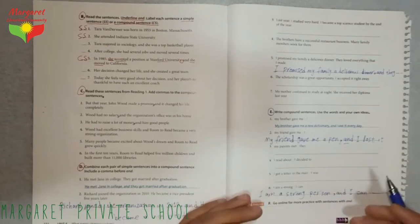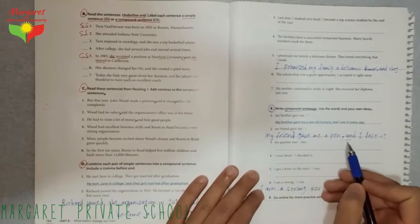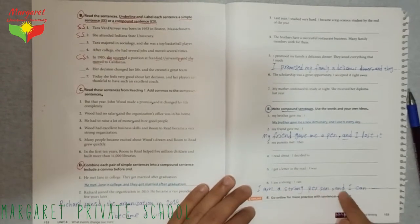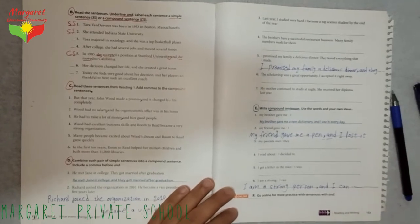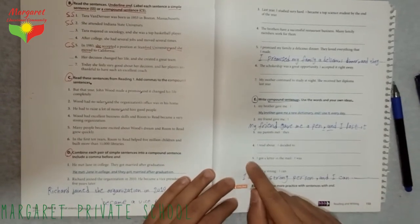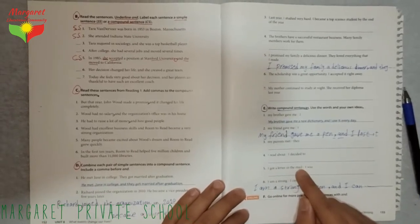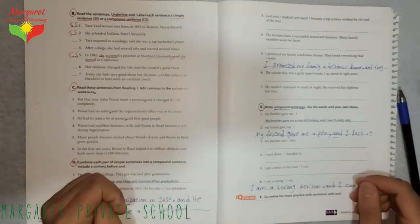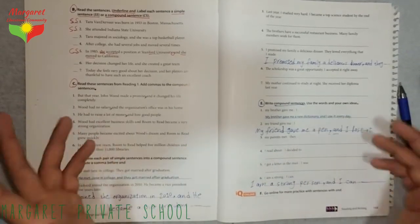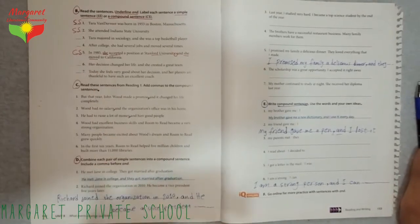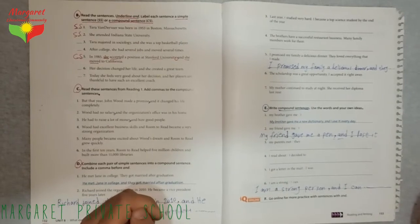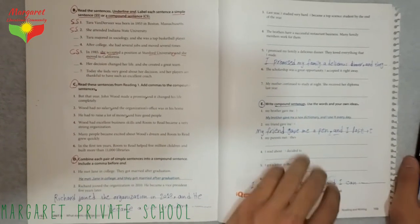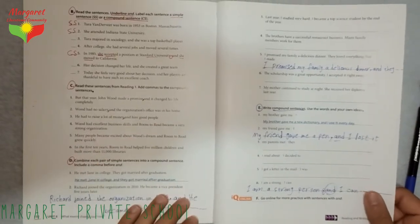Because we are talking about compound sentences, you should write down these two. The comma and 'and.' Look at number six. I am a strong person and I can, for example, do anything, do my job perfectly. Look at number five. I got a letter in the mail yesterday and I was very delighted to have a letter from my father, for example.